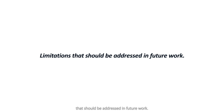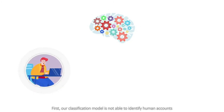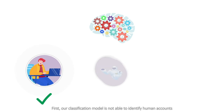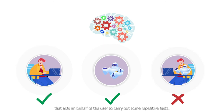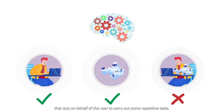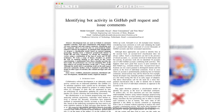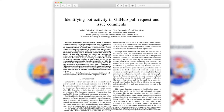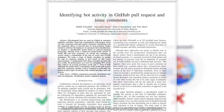Like any research, the presented work has some known limitations that should be addressed in future work. First, our classification model is not able to identify human accounts that mix their normal human behavior with some automated tool that acts on behalf of the user to carry out repetitive tasks. We call such accounts mixed accounts. In our BOTC 2021 publication, we propose a new classification model that helps to overcome this problem.